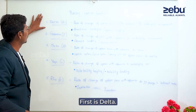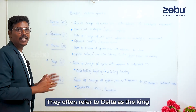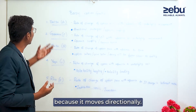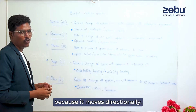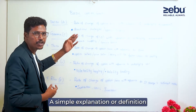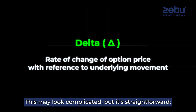Delta. Delta is king. Delta is a direction indicator. We have a simple explanation — the definition is: rate of change of option price with reference to underlying movement.